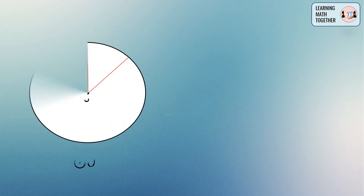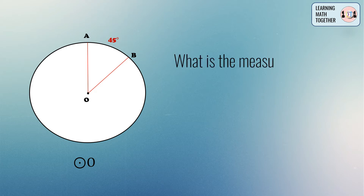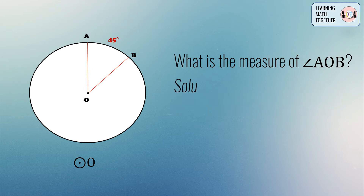Now let us discuss example number one. In circle O, the only given here is the intercepted arc AB which is equal to 45 degrees. Our task in this example is to find the measurement of central angle AOB. Before we solve for that, take note of this: